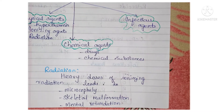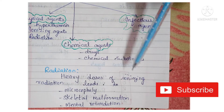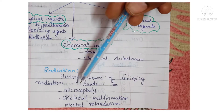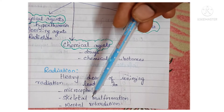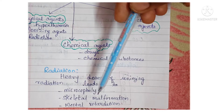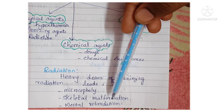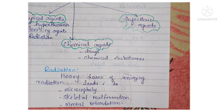Radiation: heavy doses of radiation can lead to developmental abnormalities like microcephaly — that is a small head; 'micro' means small, 'cephaly' means head. It can also cause skeletal malformations — malformations of the skeletal system — as well as mental retardation, meaning mental functioning will not develop properly.